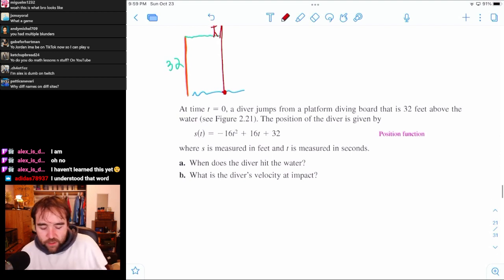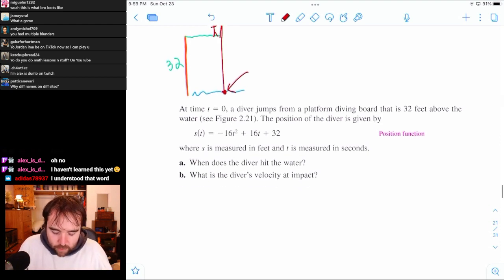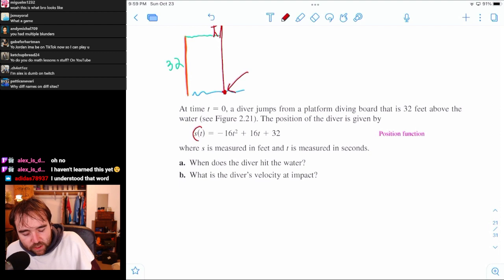And so the question then is, what is the position of the diver here when he hits the water? Zero. So if we make this position, we set this position equal to zero, that'll allow us to find the time that he hits the water.